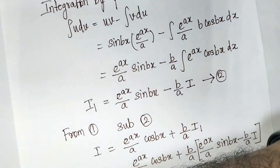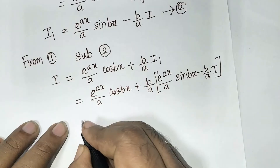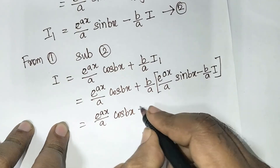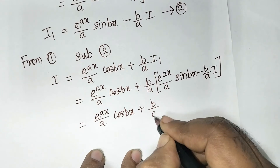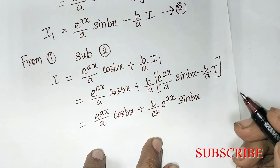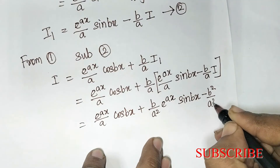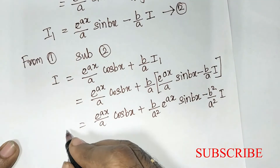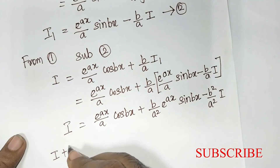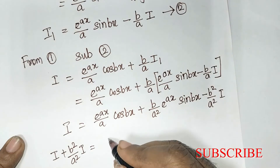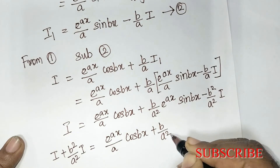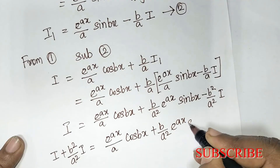Expanding this: I = e^(ax)/a · cos(bx) + (b/a)·e^(ax)/a · sin(bx) - (b/a)·(b/a)·I. That gives I = e^(ax)/a · cos(bx) + b·e^(ax)/a² · sin(bx) - (b²/a²)·I. Shifting the I term to the left side: I + (b²/a²)·I = e^(ax)/a · cos(bx) + b/a² · e^(ax) · sin(bx).